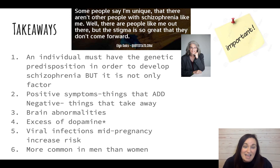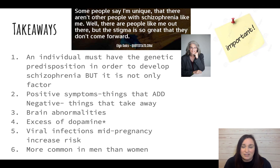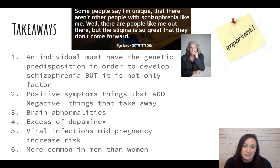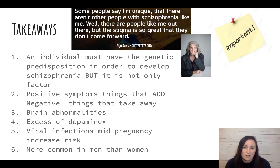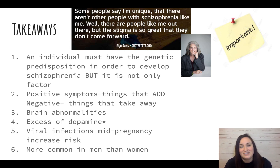Takeaways: an individual must have the genetic predisposition to develop schizophrenia, but genetics alone don't decide who gets it — environmental factors also influence the genes. Positive symptoms are things that add, such as delusions and hallucinations. Negative symptoms are things that take away, such as catatonia. There are many brain abnormalities linked to schizophrenia. People with schizophrenia have an excess of dopamine and can take medication to help, especially with positive symptoms. Mid-pregnancy viral infections increase risk, and schizophrenia is more common in men than women. That sums up Module 68 — see you in class!